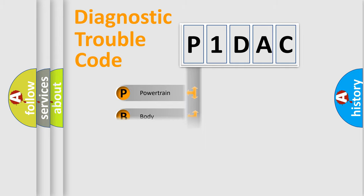Powertrain, body, chassis, network. This distribution is defined in the first character code.